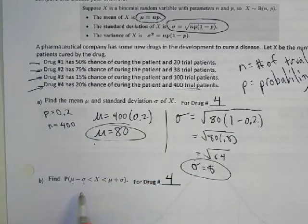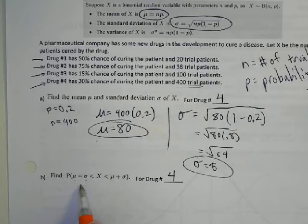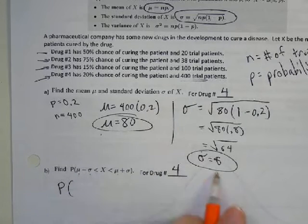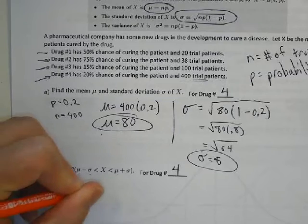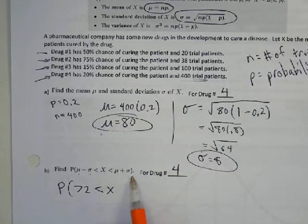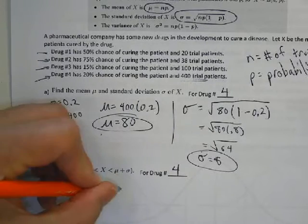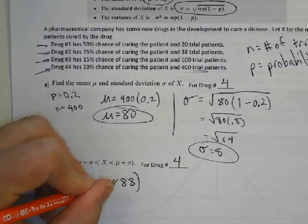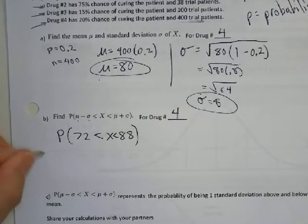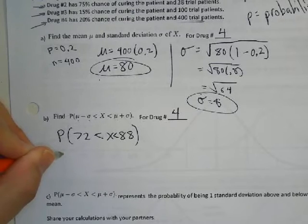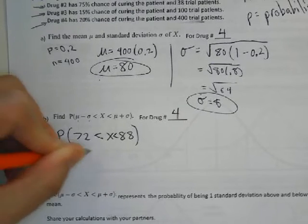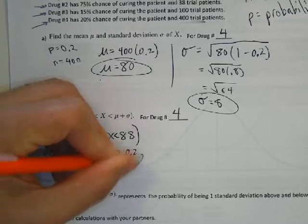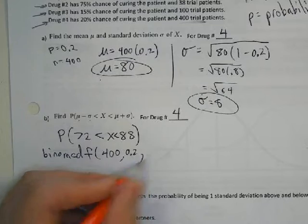We use these two values to calculate our probability. The mean minus the standard deviation is 80 minus 8, which gives 72. The mean plus the standard deviation is 80 plus 8, which gives 88. So we want to find the probability of getting between 72 and 88. In the calculator, I'm going to use binomCDF with number of trials 400, probability 0.2, and x value 88.